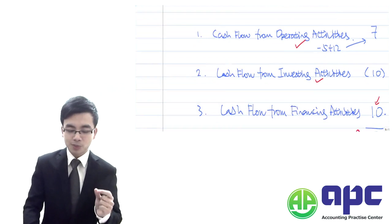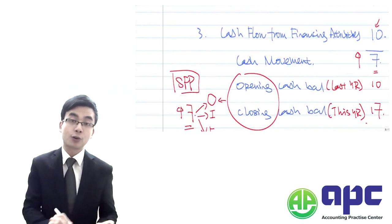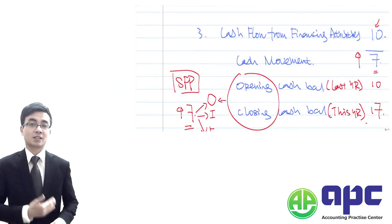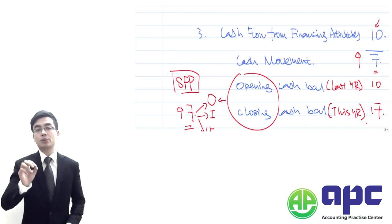So why should we split this movement into three reasons, or OIF? OIF: operating, investing, and financing activity.